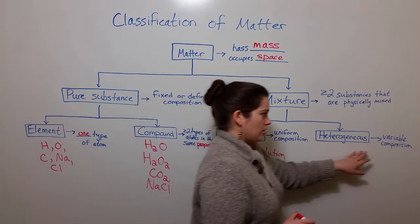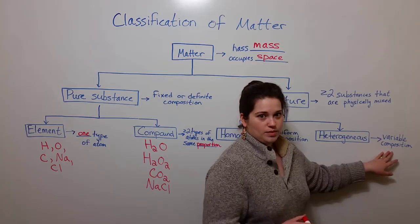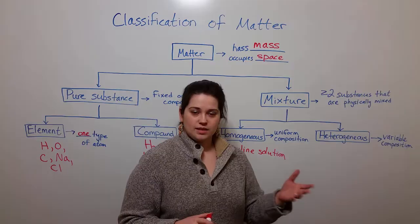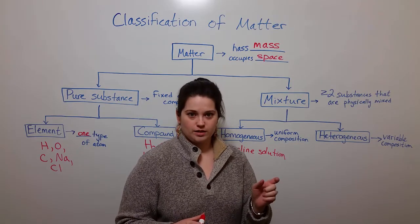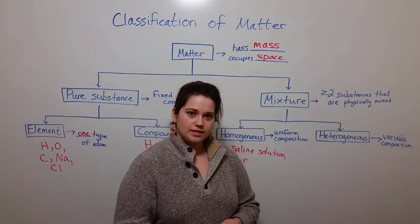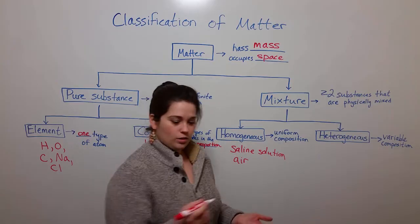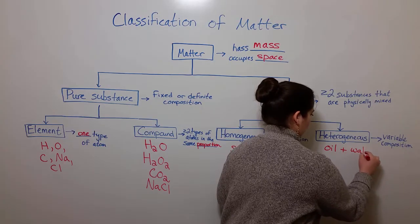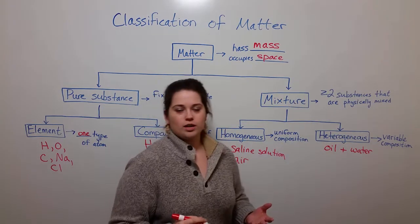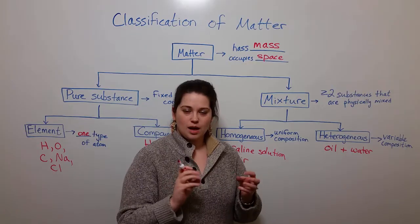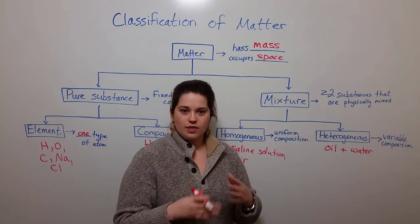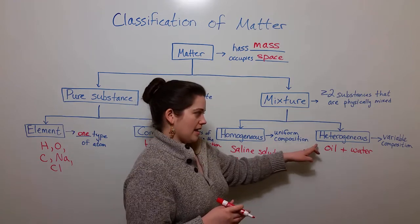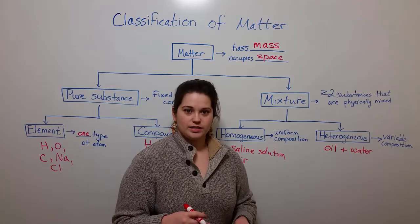Heterogeneous mixtures are those that have a variable composition. This means that it is a mixture of two different substances that if you look at the mixture, you can see the different substances. One of the best examples is oil and water. So if you mix oil and water together, they tend to clump into bits of oil or water. They don't want to mix very evenly, and so they make up a heterogeneous mixture when forced together.